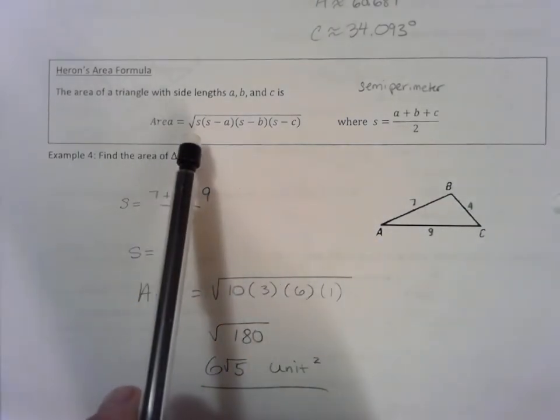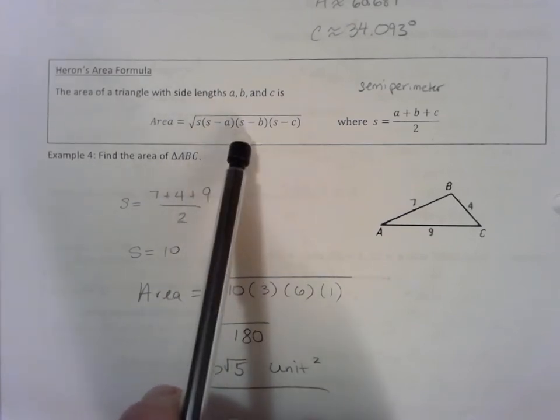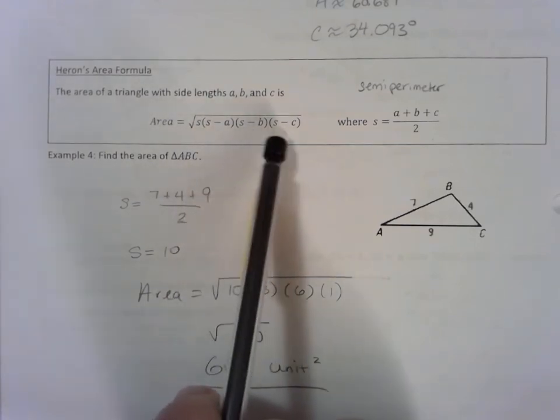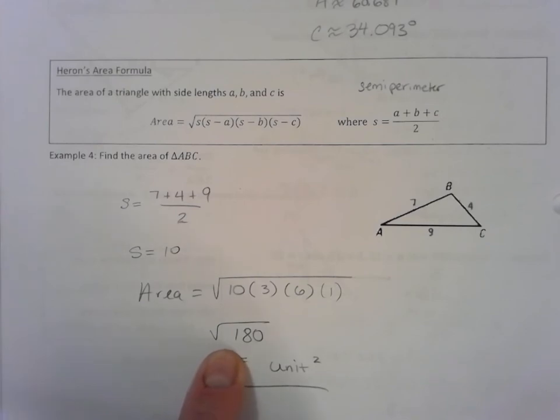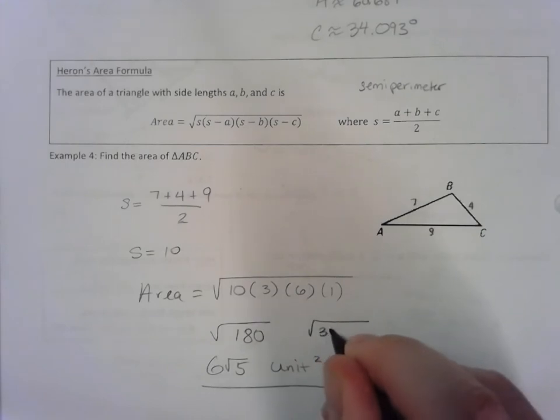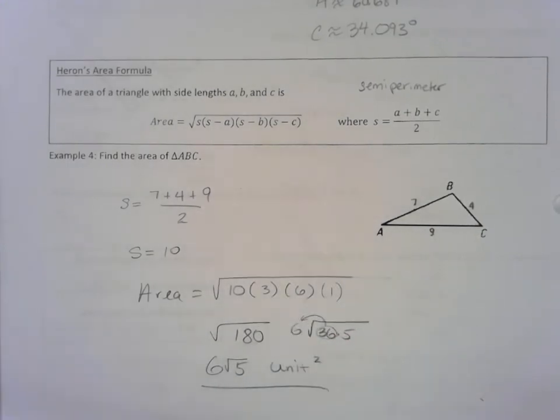First, you take all three side lengths, add them together, and divide by 2—that's called the semi-perimeter. The area is the square root of the semi-perimeter times the semi-perimeter minus side a, times the semi-perimeter minus side b, and times the semi-perimeter minus side c. Always when you square root a number, make sure you simplify it as best as you can. This was 36 times 5. This is a perfect square. When I bring it out, it becomes a 6 on the outside and a 5 on the inside. There you have it—that's the area of this triangle.